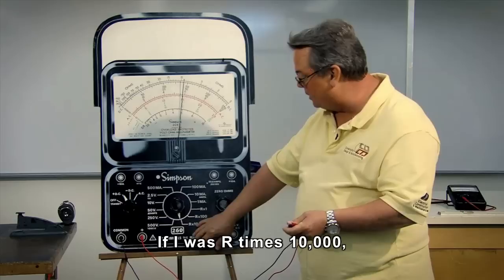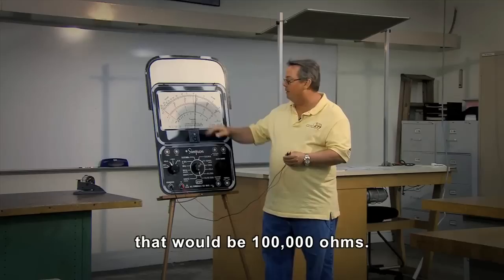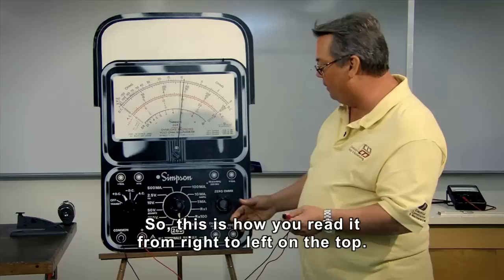And if I was R times 10,000, that would be 100,000 ohms. So this is how you read it from right to left on the top.